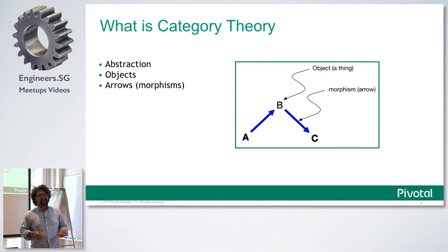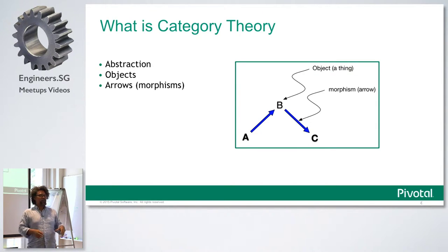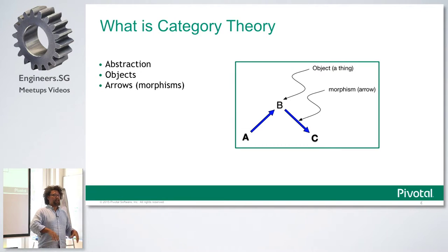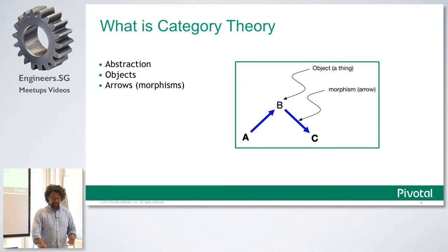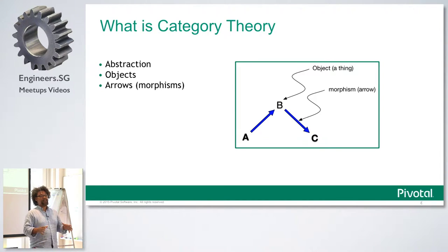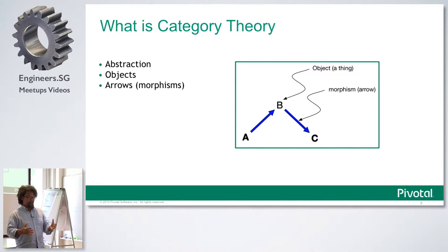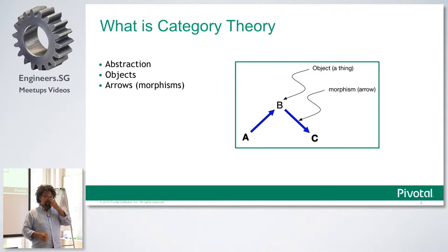Category theory is exactly that for mathematics. It's a branch of mathematics developed specifically to encompass really abstract thinking, where the thinking is ordered at such a high level of abstraction that the things — called objects — can literally be anything: a person, a human being, an object like a fan, or for our purposes, elements of our programming languages.